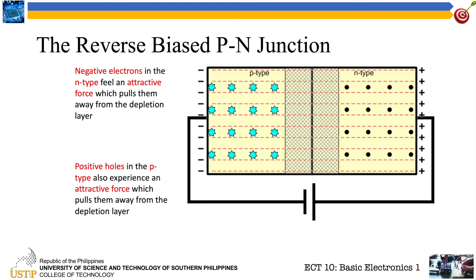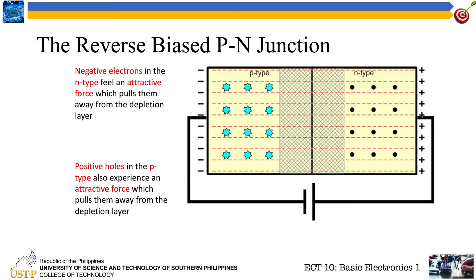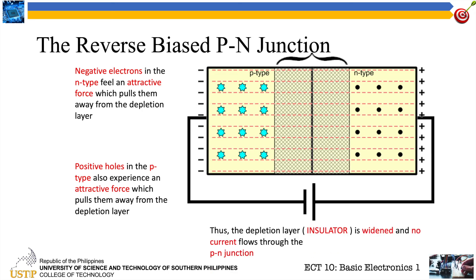Observe — the charges are repelling each other. This voltage attracts our electrons, and the negative terminal attracts our p-type, until it creates a very large depletion layer that is widened. Since the depletion layer is an insulator, a reverse-biased p-n junction does not allow current to flow.